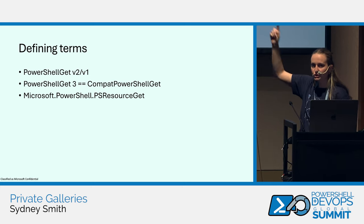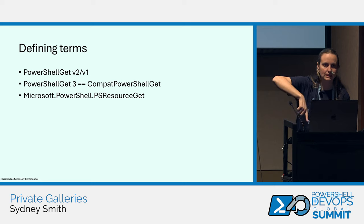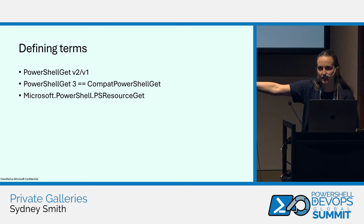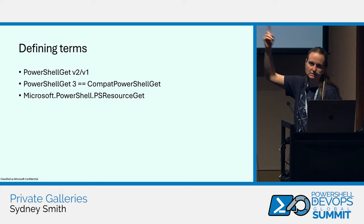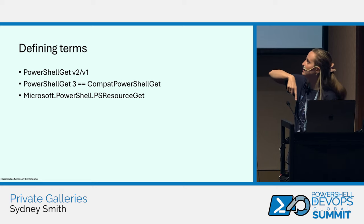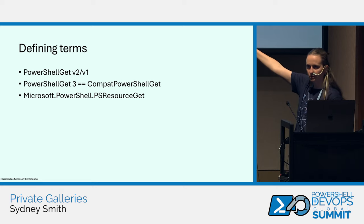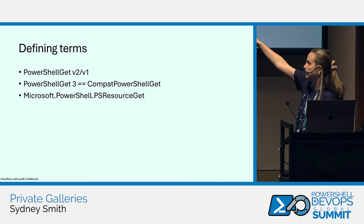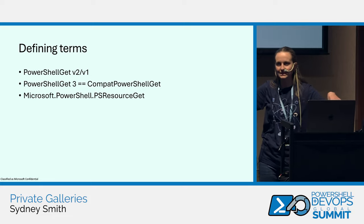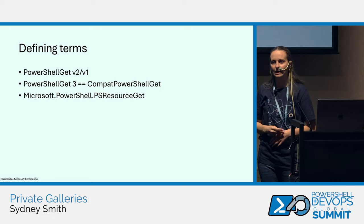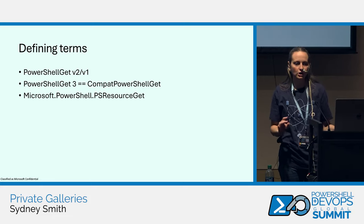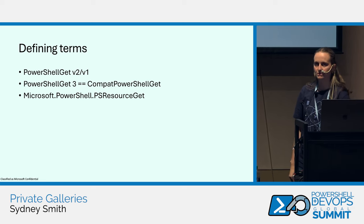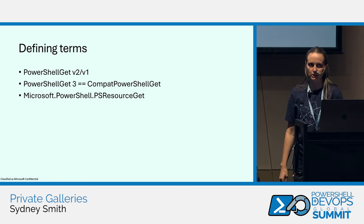So those are the terms at this point. PowerShell Get v3 is really a compatibility layer — it's the v2 syntax, but under the hood the engine is this new PSResourceGet thing. PSResourceGet first shipped inbox in PowerShell 7.4, which GA'd in November. PSResourceGet 1.0 GA'd this past October. And then we've got v2 and v1 of PowerShell Get. That's the landscape when we're talking about the key modules in the package management landscape in PowerShell today.